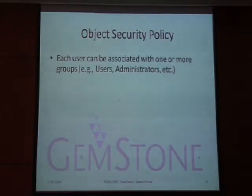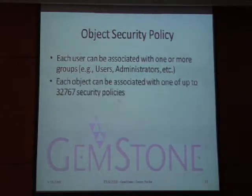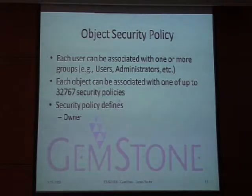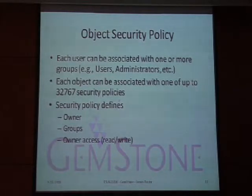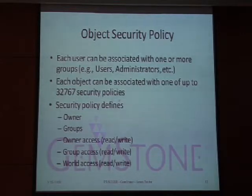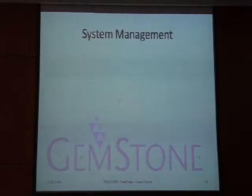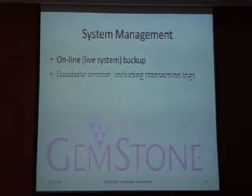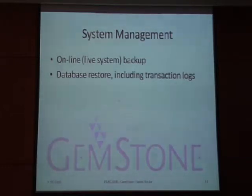For object security, each user can be associated with one or more groups — such as power users or administrators. There are up to 32,000 security policies, each with owner access, group access, and world access — somewhat similar to Unix security for files and directories. You can do a live online backup without taking the system down, and restore to the database including transaction logs, so you do not lose any transactions that committed.